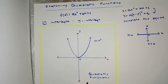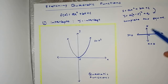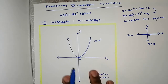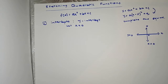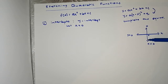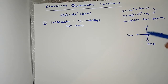To sketch any function, first and foremost you must determine the intercepts — the intercepts are where your function will either cut the y-axis or the x-axis. For the y-intercept you let x equal to zero, because you are looking for the value where the function will actually cut the y-axis. The equation of the y-axis is x equals zero.